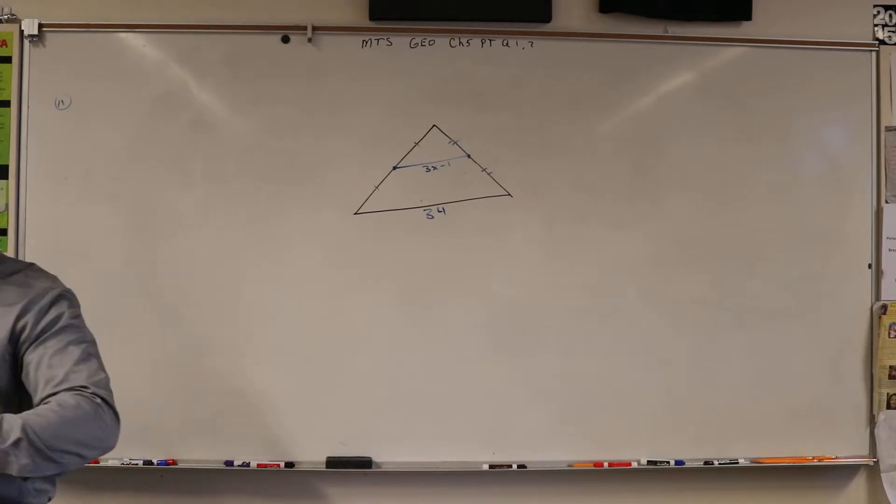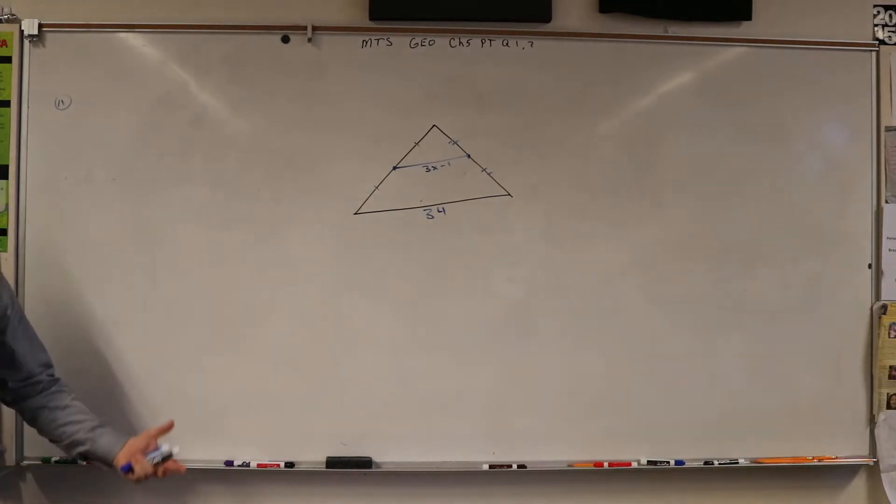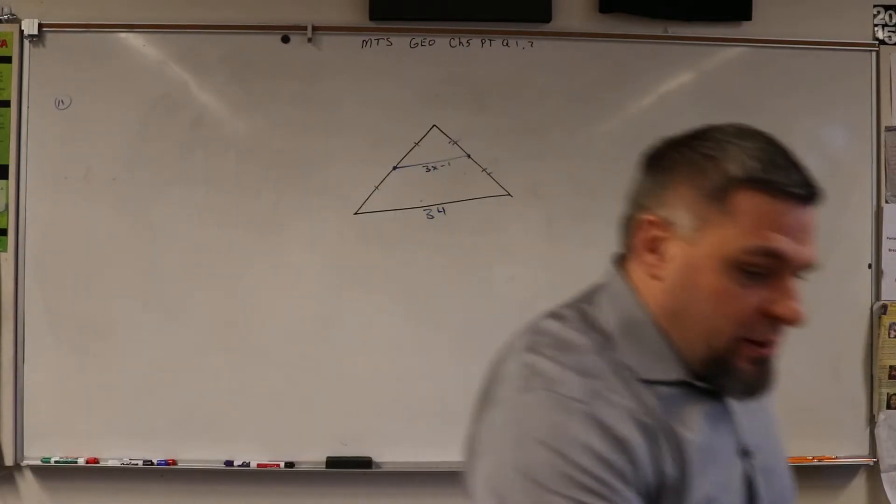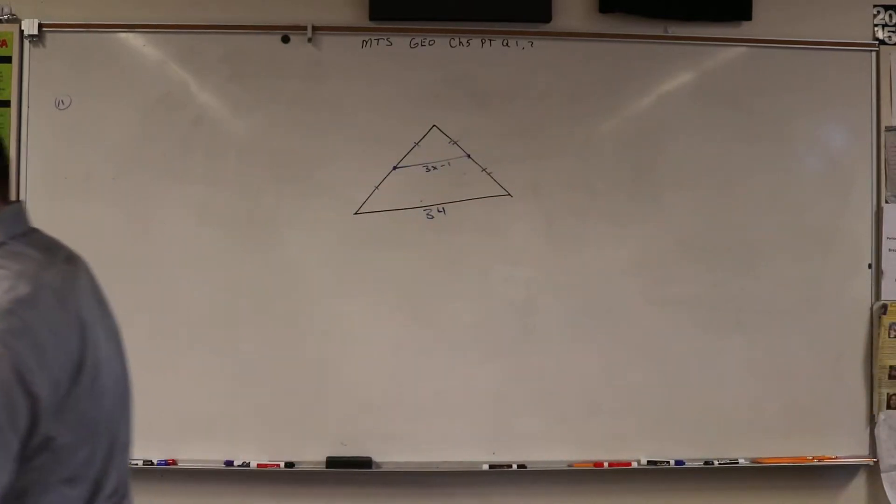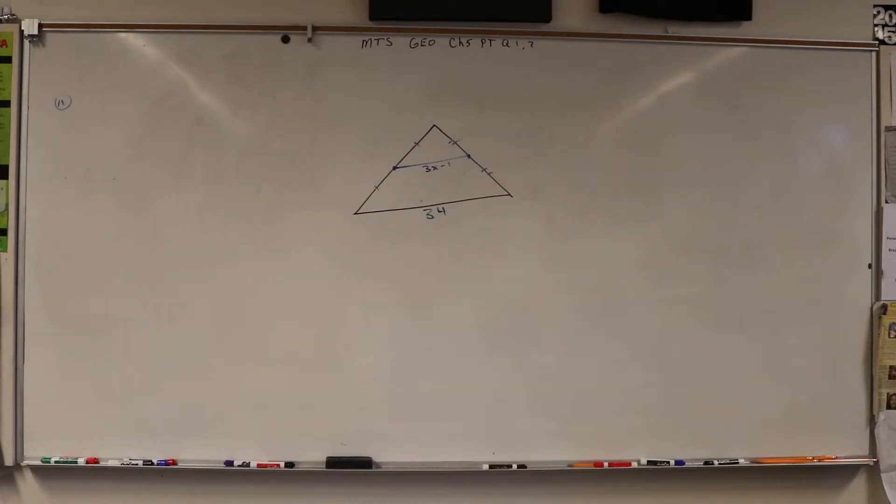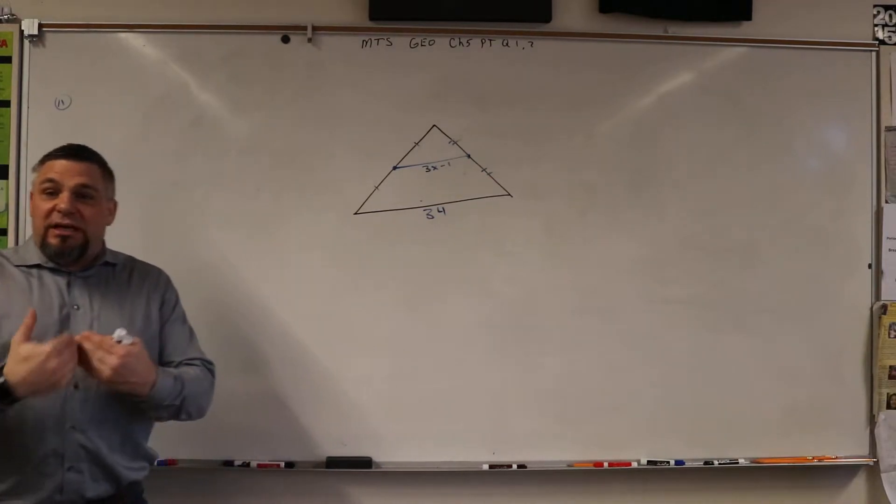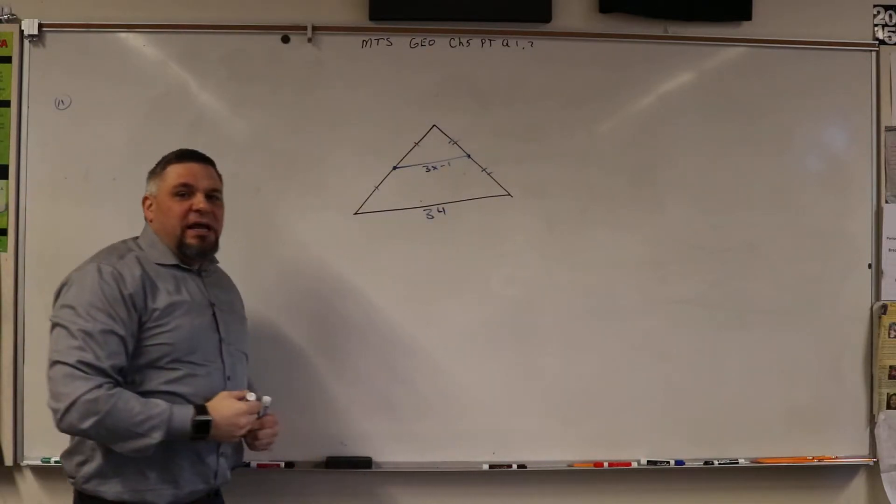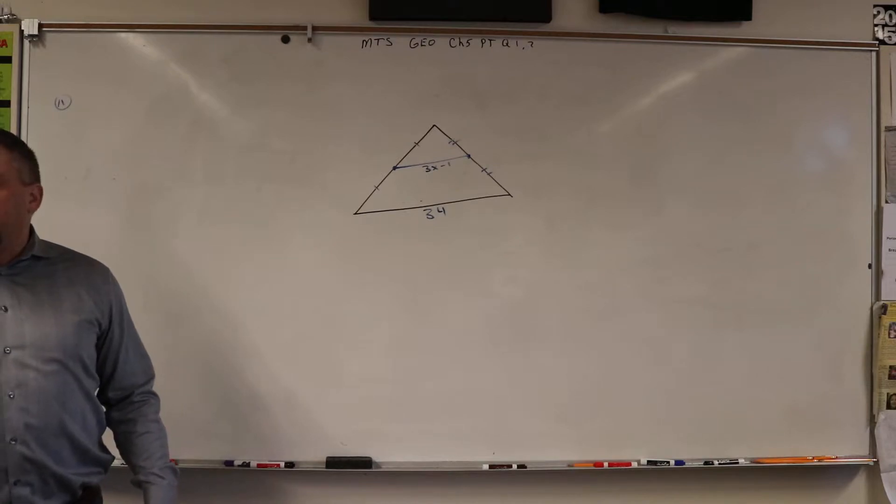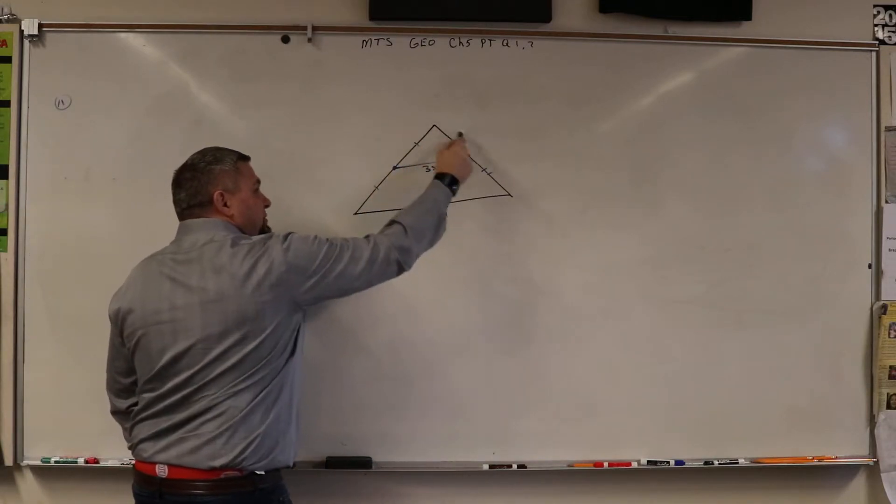But it's not a perpendicular bisector. Remember all those ones we're doing? Perpendicular bisector, finding the circumcenter. So it's not a perpendicular bisector, it's just a bisector. So when you have a bisector of two sides, we call this a segment bisector because it's bisecting two segments.